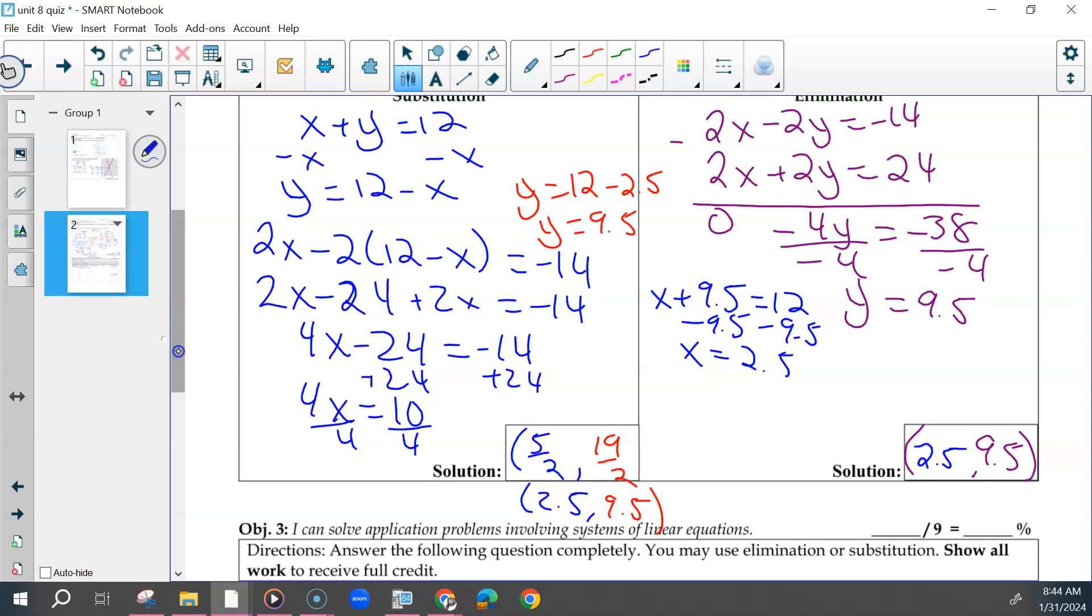So then again, the five points on that one were setting up your elimination correctly, solving for x correctly, getting the correct x value, solving for y correctly, getting the correct y value. So just to see if you were able to get the correct answer. Questions on that one?